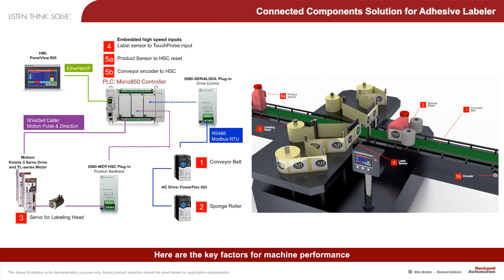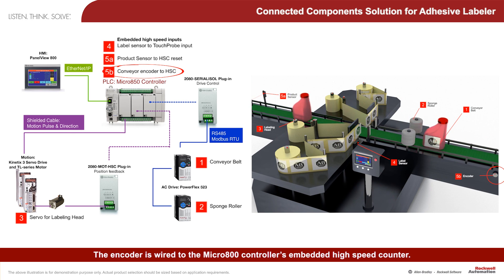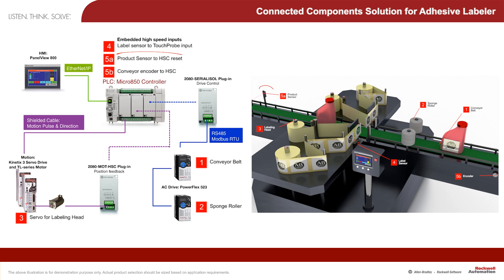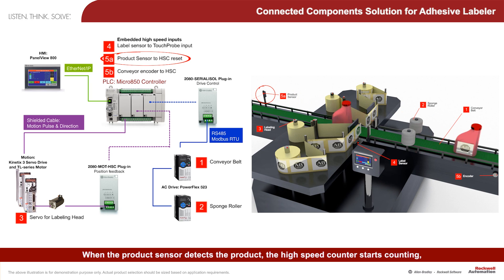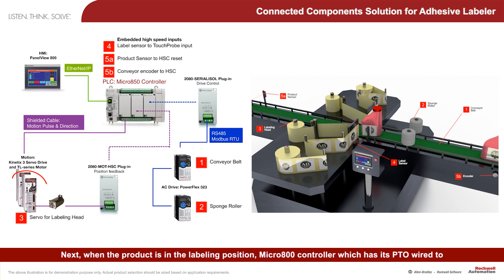Here are the key factors for machine performance. The first step in the labeling process is to know the exact position of the bottle on the conveyor. The encoder is wired to the Micro 800 controller's embedded high-speed counter. When the product sensor detects the product, the high-speed counter starts counting, providing exact position in preparation for the label to be applied.